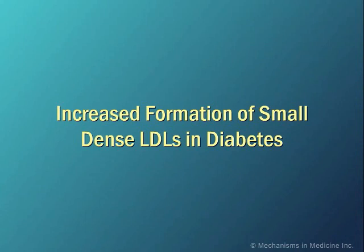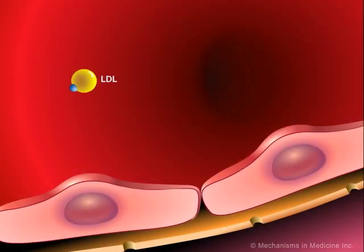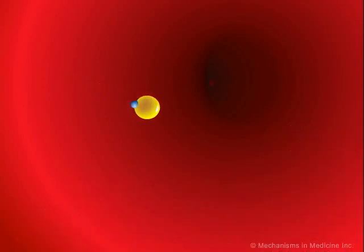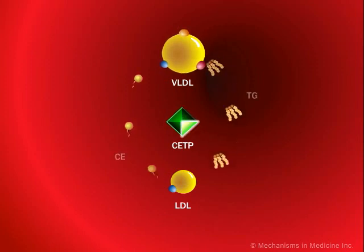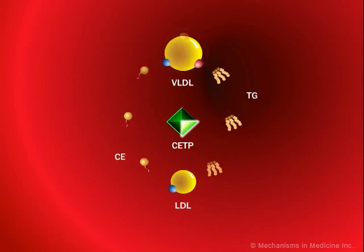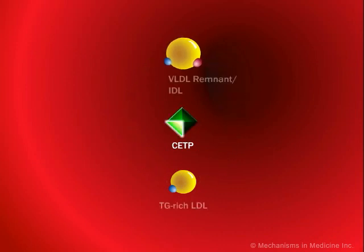This animation shows the formation of triglyceride-rich LDL particles. LDL exchanges cholesterol esters for triglycerides with a VLDL particle. This exchange is facilitated by the cholesterol ester transfer protein, shown in green. Cholesterol ester transfer protein therefore helps to convert very low-density lipoproteins into VLDL remnants or intermediate-density lipoproteins.